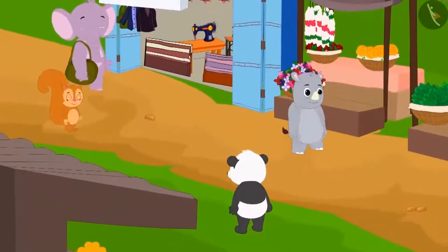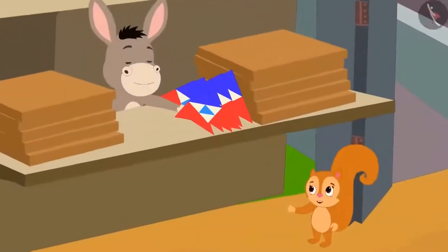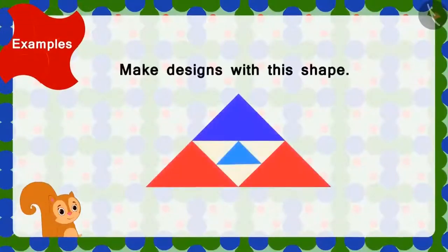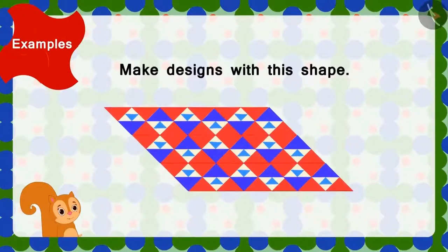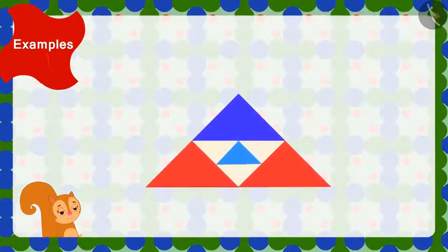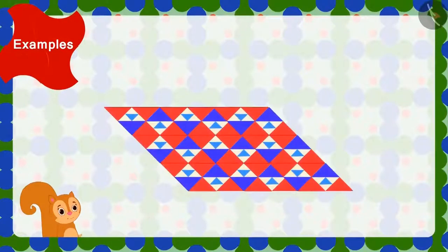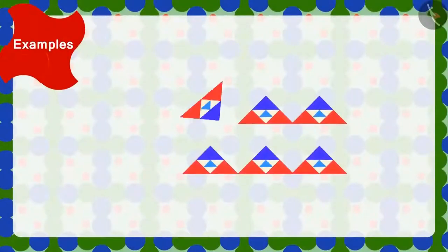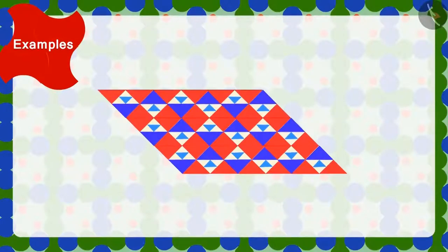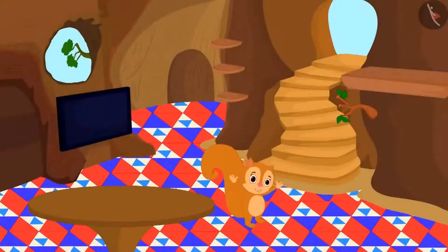Next day, Chanda bought these types of tiles from the market. The shopkeeper had told Chanda that she could use tiles with such a shape and make this type of design. But Chanda is unable to make this design. Children, can you help Chanda make a design using the tiles with this shape? Yes, we can make this design by turning and joining the tiles in this manner. Chanda is very happy to see the design of her new floor.